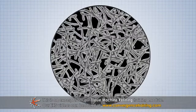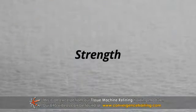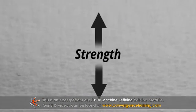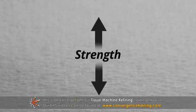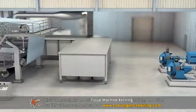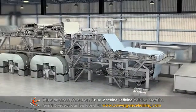The primary objective of refining is to develop sheet strength. The sheet must meet the customer's strength requirements and must be able to run on the tissue machine and converting equipment without breaking.